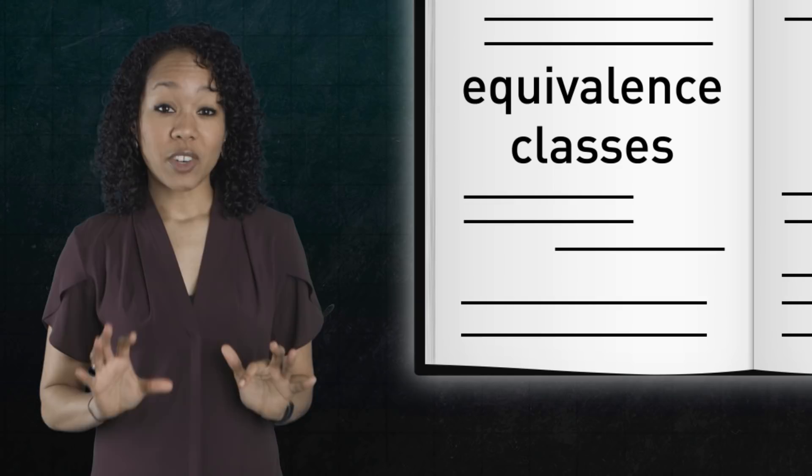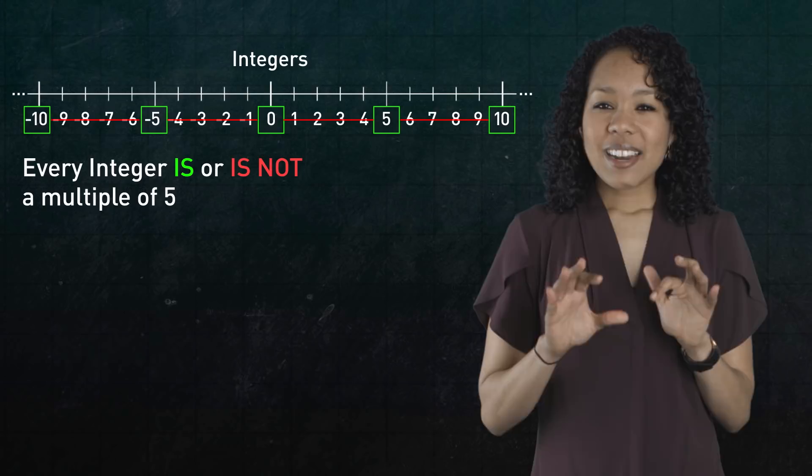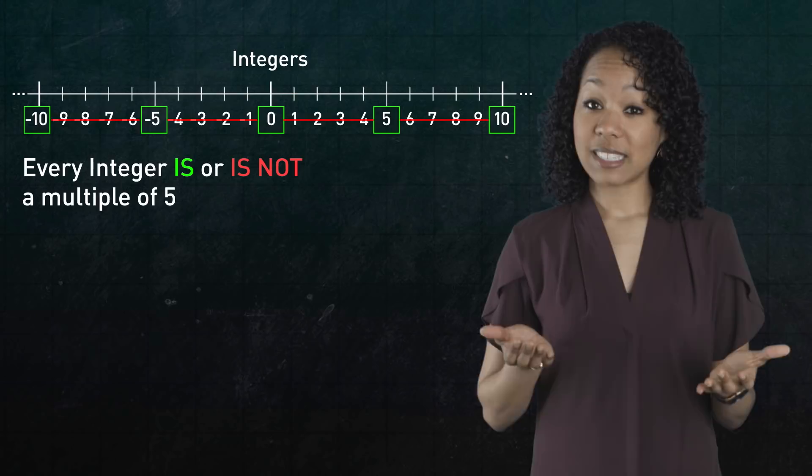To start, we'll look at the set of integers. Any integer either is a multiple of 5 or it is not. Pretty simple. But an integer can fail to be a multiple of 5 in several ways, 4 to be exact.